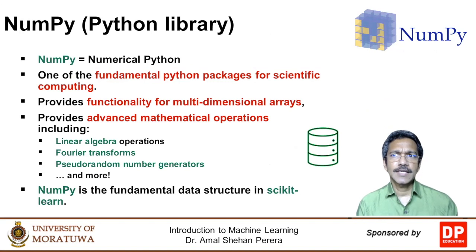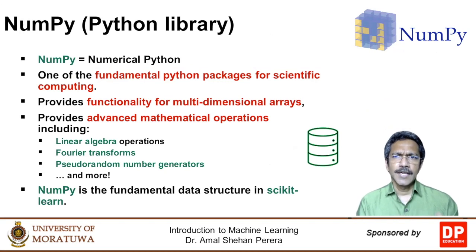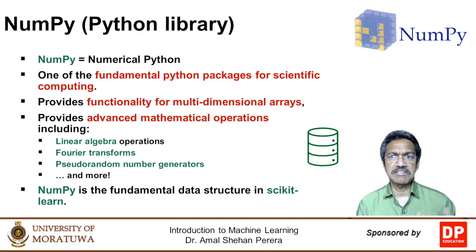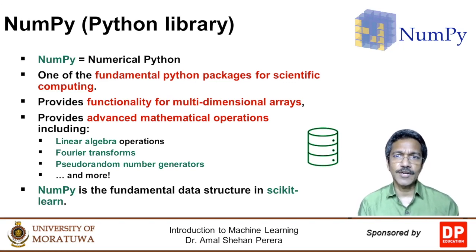NumPy is a Python library with a large number of facilities to help you do scientific computing — allowing us to solve complex mathematical computations required in science and engineering problems. It provides functionality for multi-dimensional arrays and a collection of advanced mathematical operations such as linear algebra operations, Fourier transformations, and generating pseudo-random numbers. You can use these functionalities in machine learning to process input or output data, and sometimes to modify machine learning algorithms available in Python.